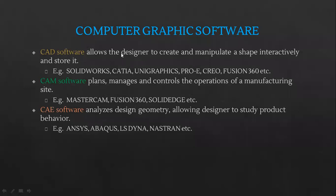These are all what computer graphics offers. For example, you have your CAD software, which allows a designer to create and manipulate a shape interactively and store it. We are basically modeling it — creating and manipulation of the shape geometry. Examples include SolidWorks, CATIA, Uni Graphics, Pro-E CREO, and Fusion 360.